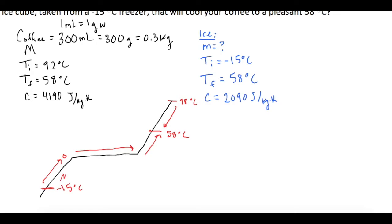So we're going to have an M C delta T for the ice melting. And then it's going to change phase from solid to liquid. And then we're going to have another temperature change from zero up to 58. And then for the coffee, it's going to be cooled from 98 down to 58. So energy is conserved here.